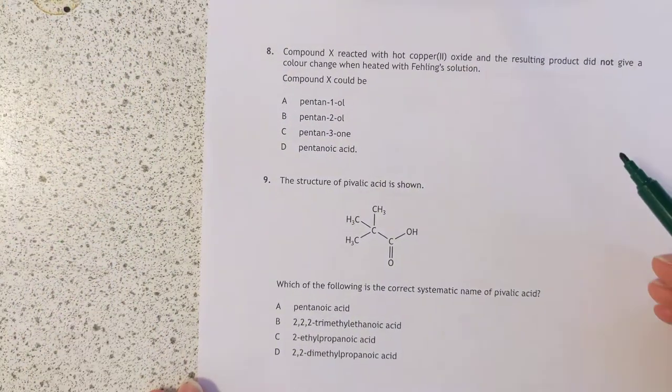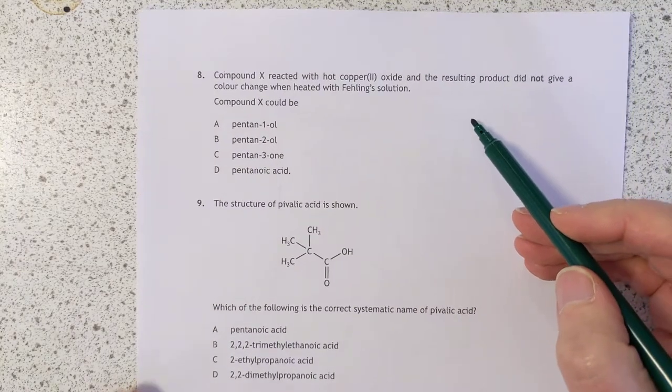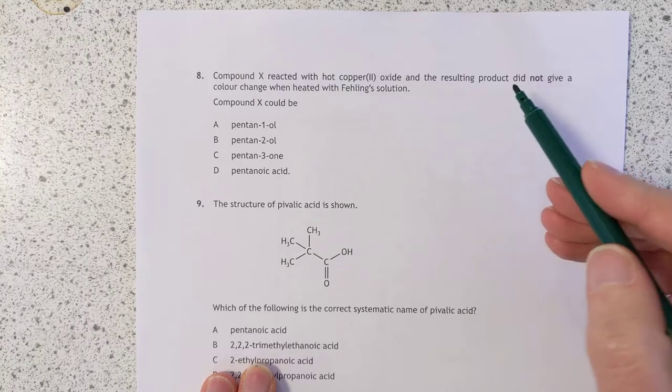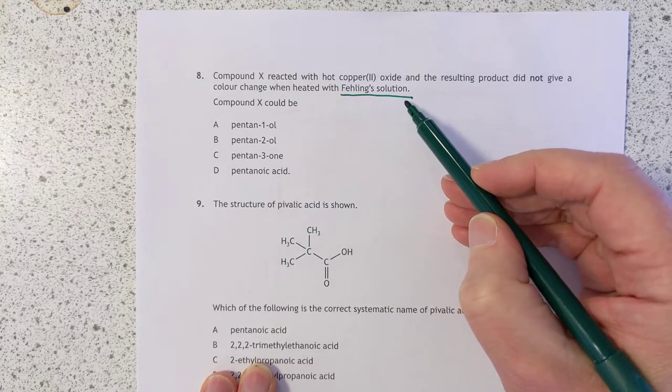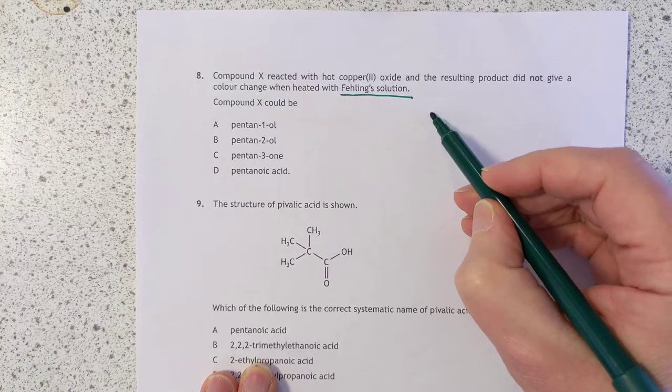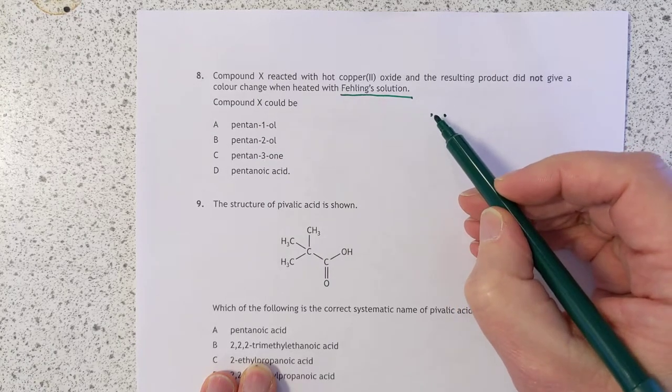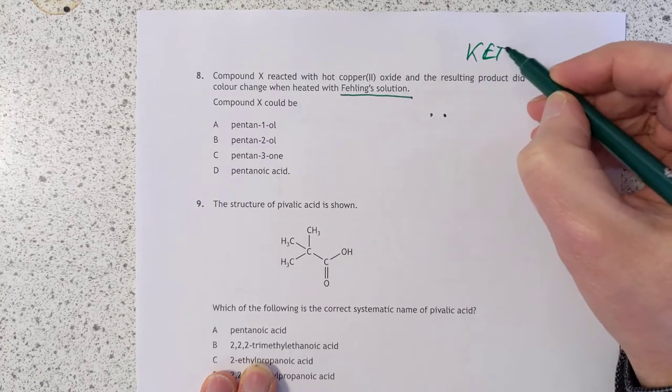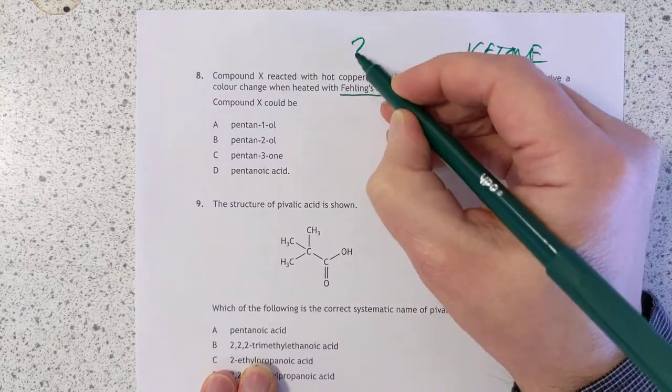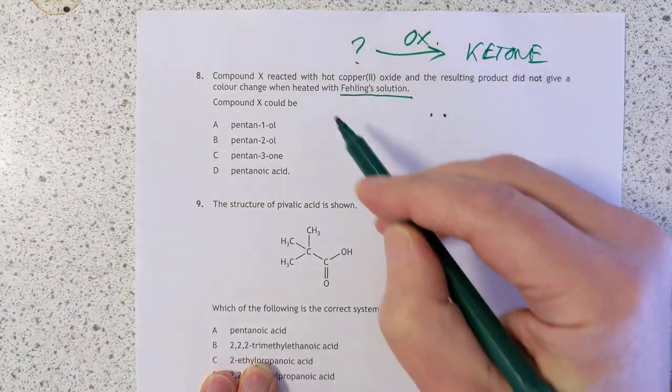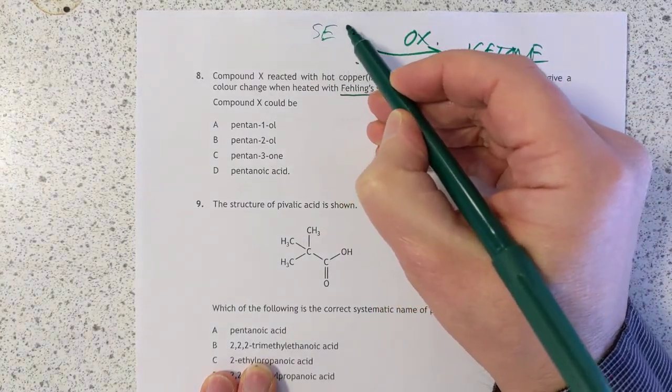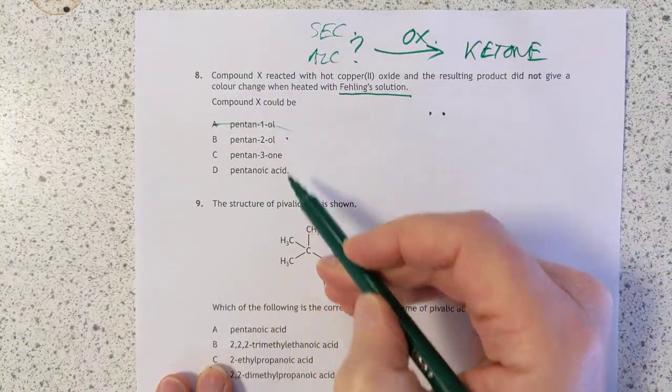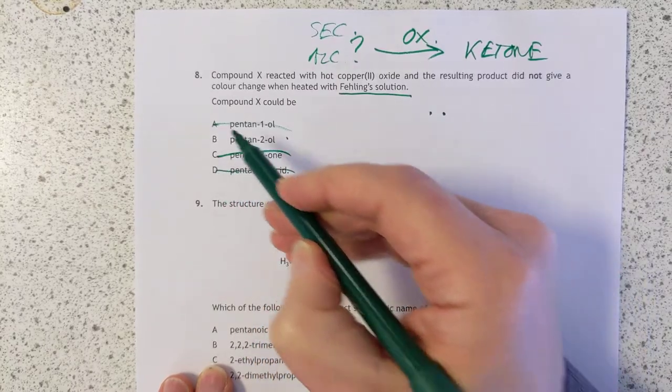Question 8: Compound X reacted with hot copper oxide, and the resulting product did not give a colour change when heated with Fehling's solution. Fehling's is used, along with Tollens, to tell the difference between aldehydes and ketones. Aldehydes can be oxidised, ketones cannot. So we're dealing with a ketone after we have oxidised it. So the starting compound here makes a ketone when you oxidise it, which means this has to be a secondary alcohol. It's that one.